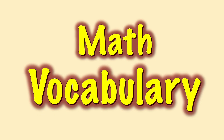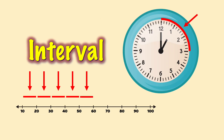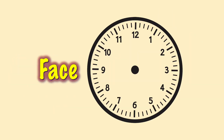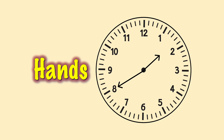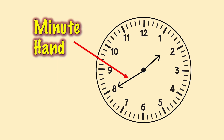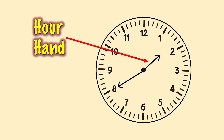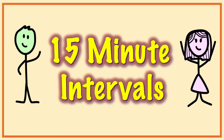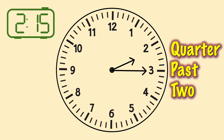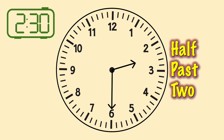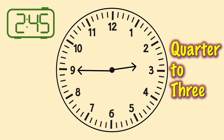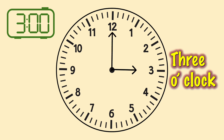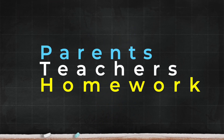Let's review what we've learned. Math vocabulary: an interval is an even space between things. An analog clock is a clock that has a round face, numbers, and two hands that move. A minute hand is the long hand on the face of an analog clock. An hour hand is the shorter hand. When we tell time by 30 minute intervals, we have two possible times: half past and the hour. When we tell time by 15 minute intervals, we have four possible times: quarter after (15 minutes after the hour), half past (30 minutes after), quarter to (45 minutes after), and the new hour.